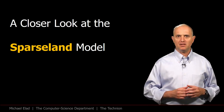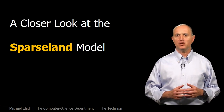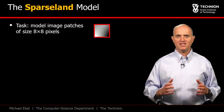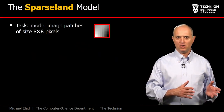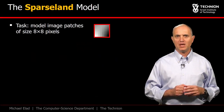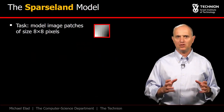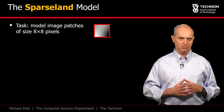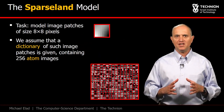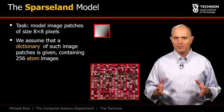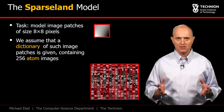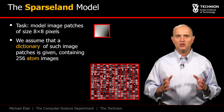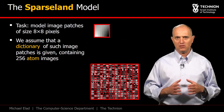Let's have a closer look at how the Sparsland model operates. Following the example of the DCT model and the JPEG algorithm, we describe this model in the context of 8 by 8 image patches. Our modeling relies on a given dictionary, a set of patches of the same size, which we will refer to as the atoms of the model.